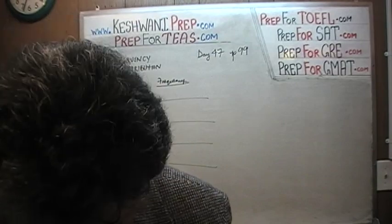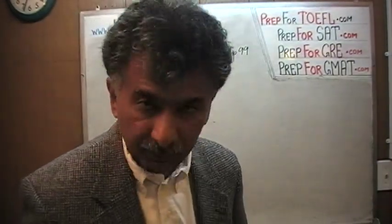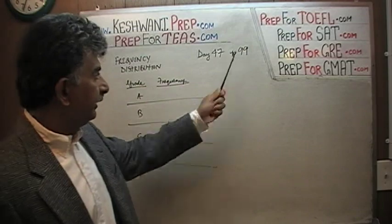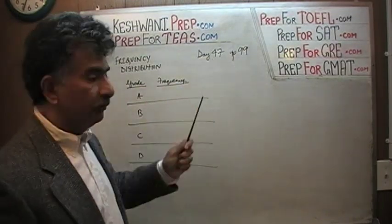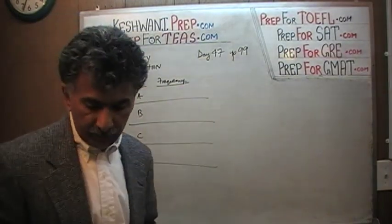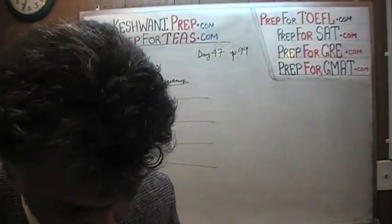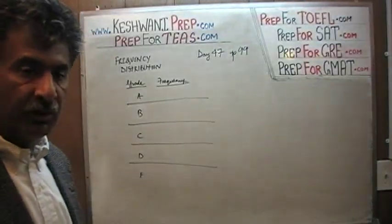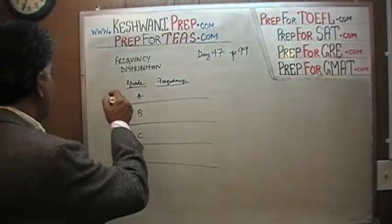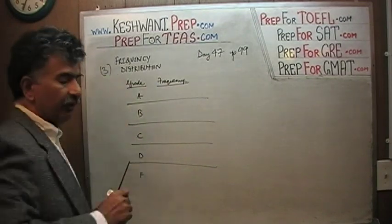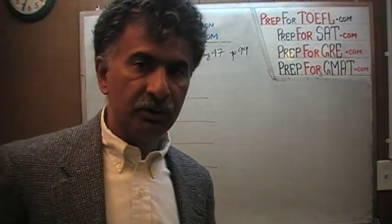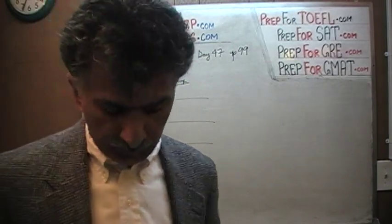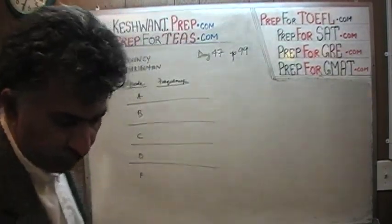The problem we are about to solve is the one you will find on page number 99. Please turn to it. Page 99, today's lesson number 47. The very last problem is what we are going to do — problem number 3, which deals with frequency distribution. Our job is to produce a pie chart based on that frequency distribution.